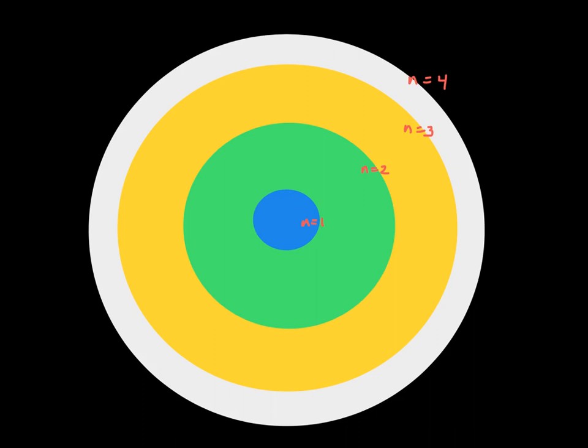So Bohr's model basically looks like these energy levels or orbits. So here's an orbit. We call it the first energy level, or n equal to 1.